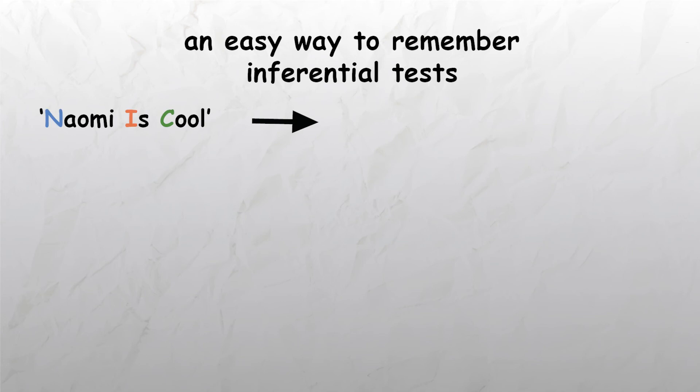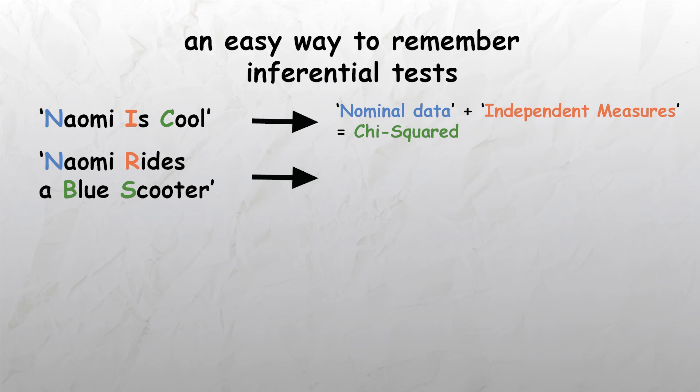Naomi is cool can be used to remember that nominal data plus independent measures equals chi-squared. Naomi rides a blue scooter can be used to remember that nominal data plus repeated measures equals binomial sign test.